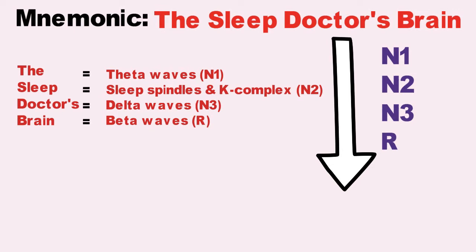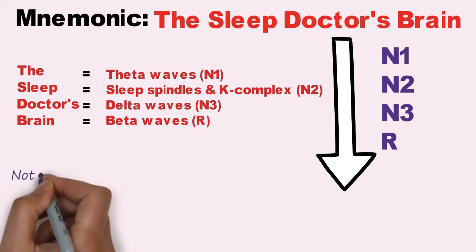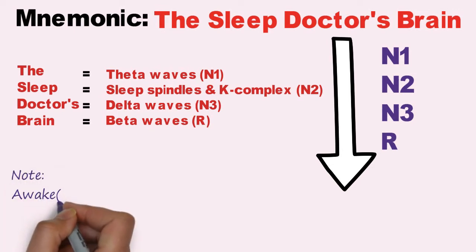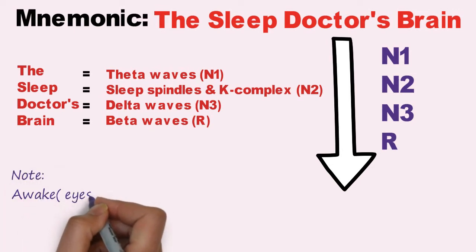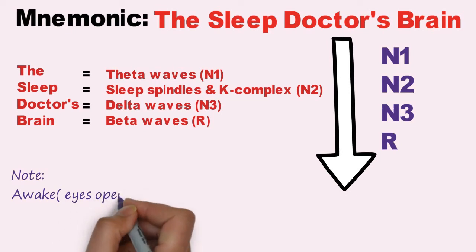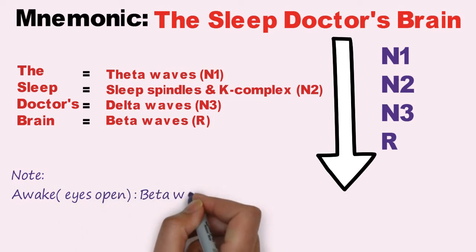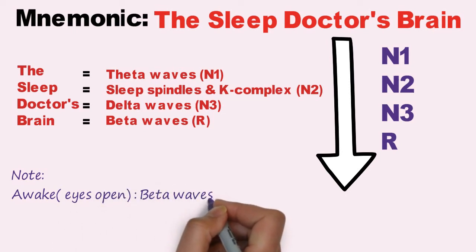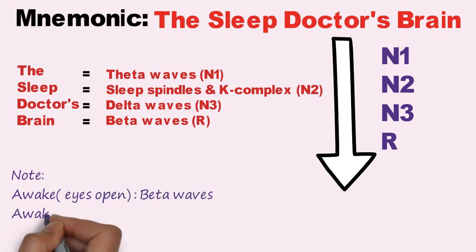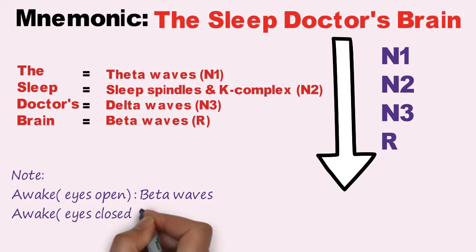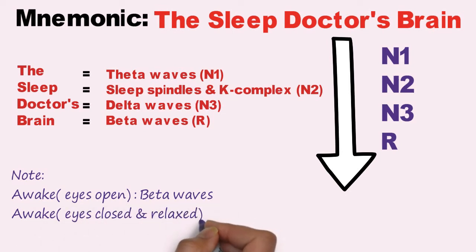When you are awake with eyes open, EEG will record beta waves. When you are awake with eyes closed and relaxed, EEG will record alpha waves.